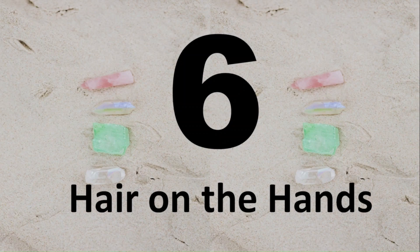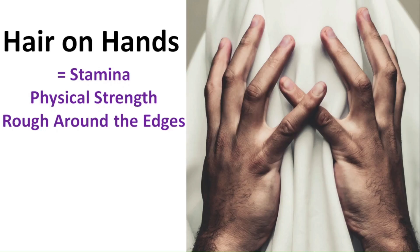Number six, hair on the hands. Points to stamina, physical strength, and someone who is more rough around the edges. The roughness could be offset if the texture of the skin is fine.